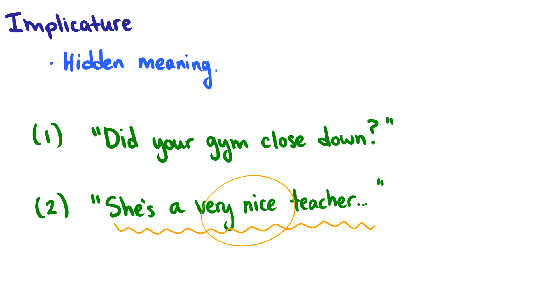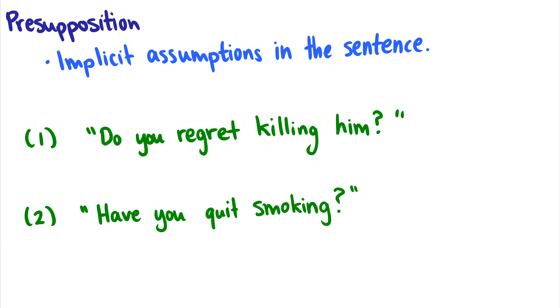Now, on the other side of implicature, where we have hidden meaning, sometimes we miss this, right? Sometimes we miss the hidden meaning and we take it literally. There's this term called presupposition, where if you miss the hidden meaning, or the implicit assumptions in the sentence, it can get you in a lot of trouble. So for instance, let's just go right into a sentence, and then we'll explain presupposition with this sentence.